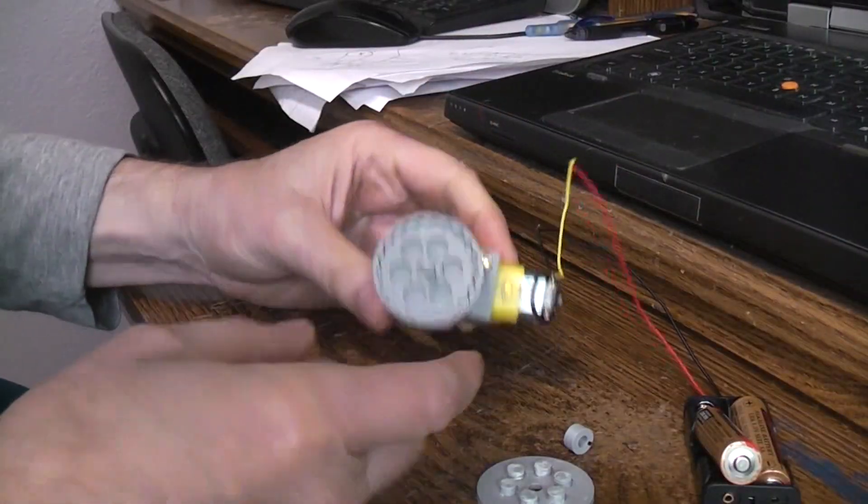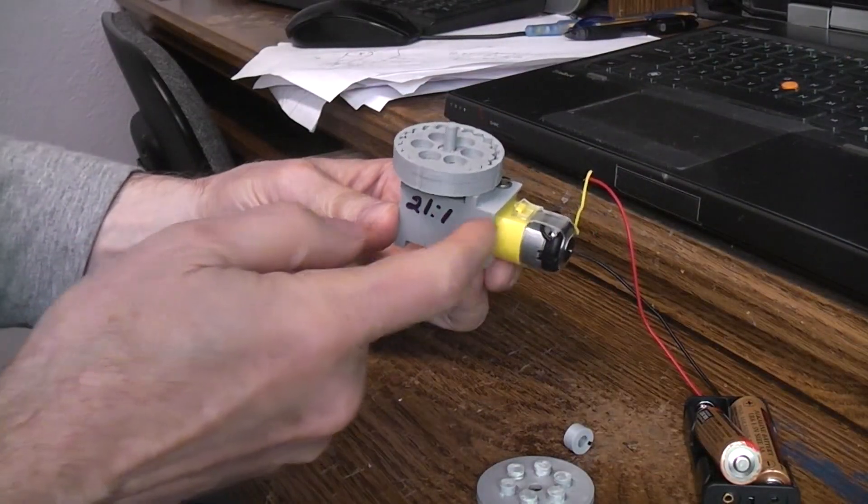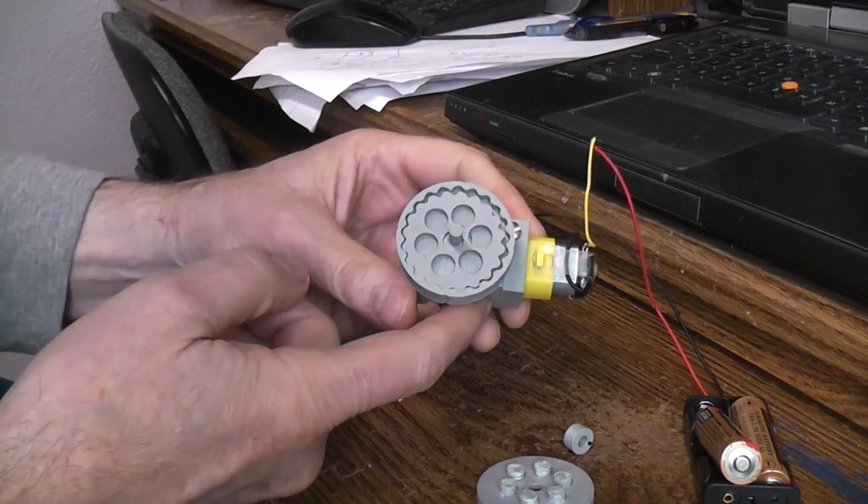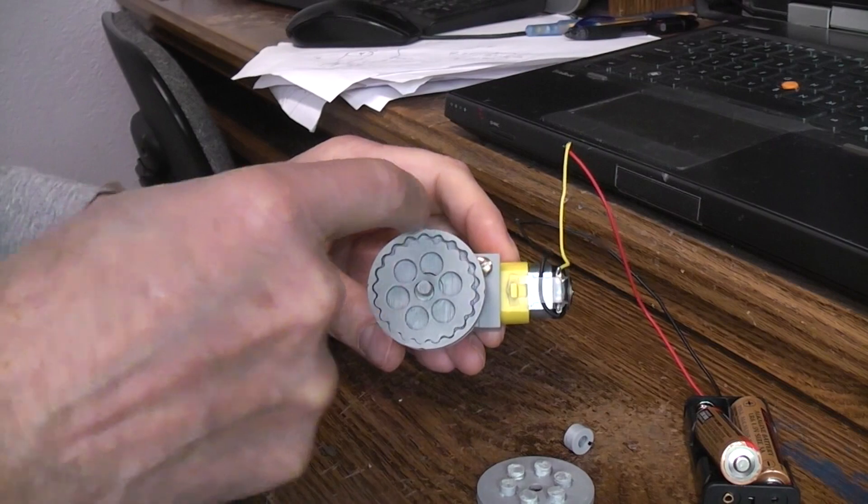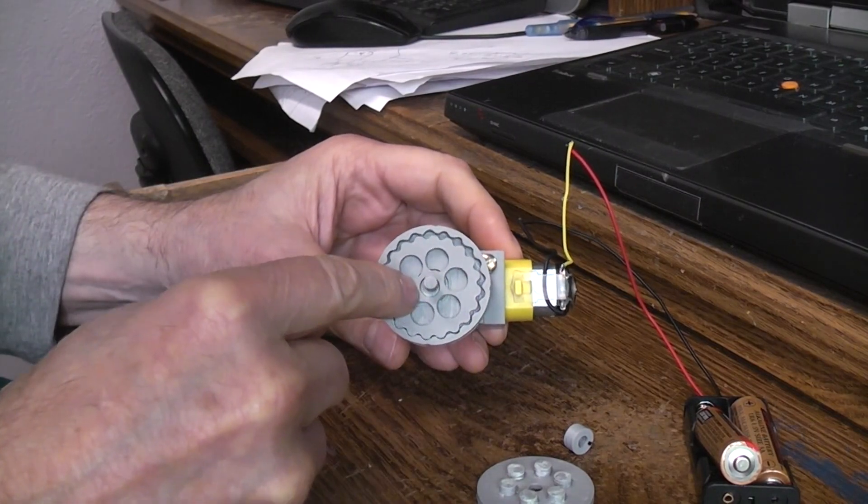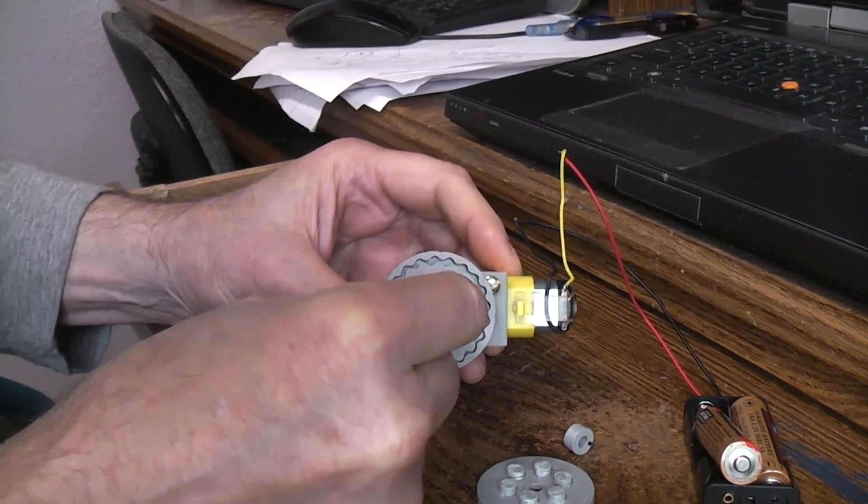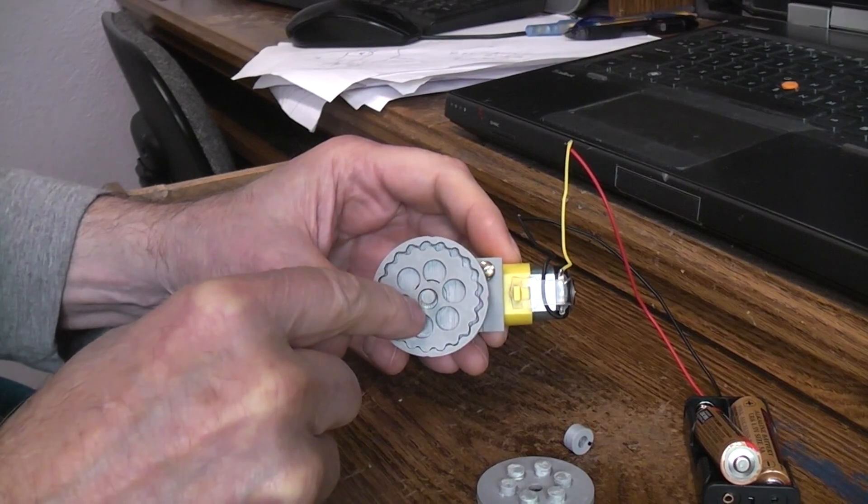So there's very few parts to print. There's a frame that holds the TT motor if you want to use that. There's this, let's call this a gear just to make it easier to talk. There's the outer gear and there's this inner gear. There's this drive shaft with an offset lobe on it.